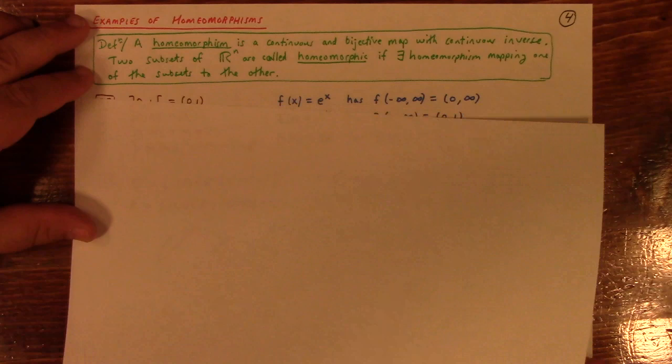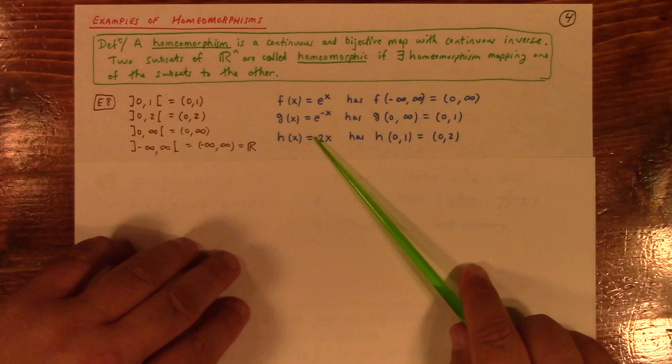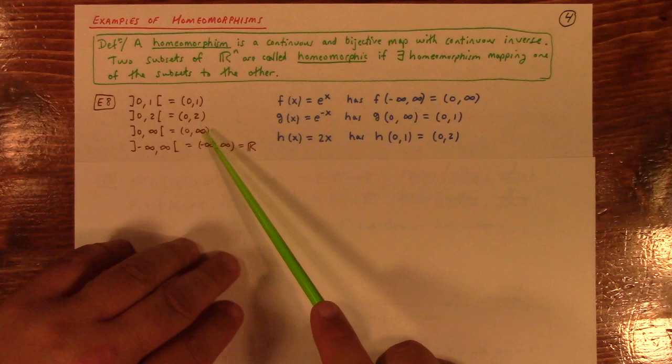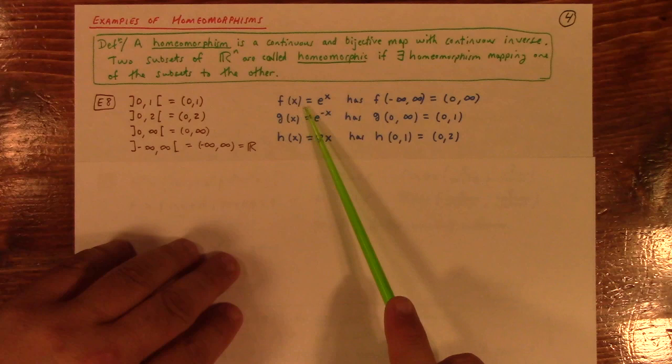So, many sets are homeomorphic to one another. Like, any open set 0, 1, 0, 2, 0 to infinity, minus infinity to infinity, these are all homeomorphic. And here's the homeomorphisms that do it for you. The exponential map maps the real line to the positive reals. e to the minus x maps the positive reals to 0, 1. If you think about it, this is all like pre-calculus graphing stuff.